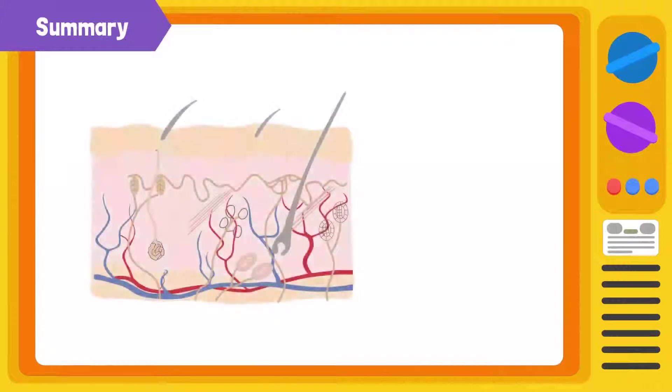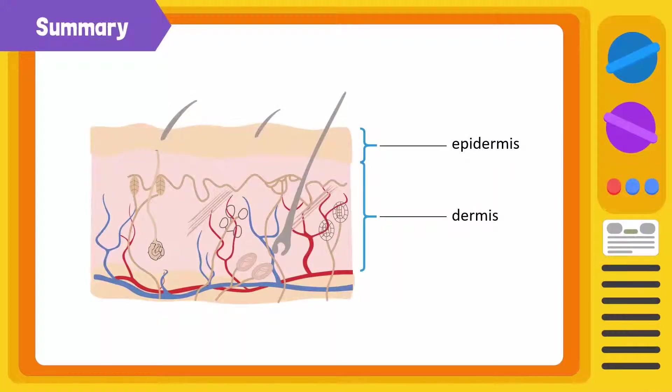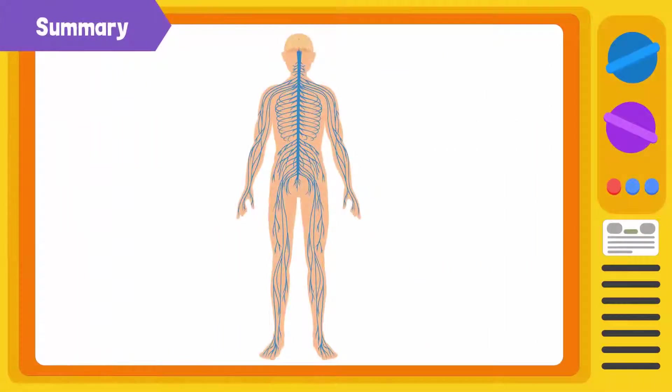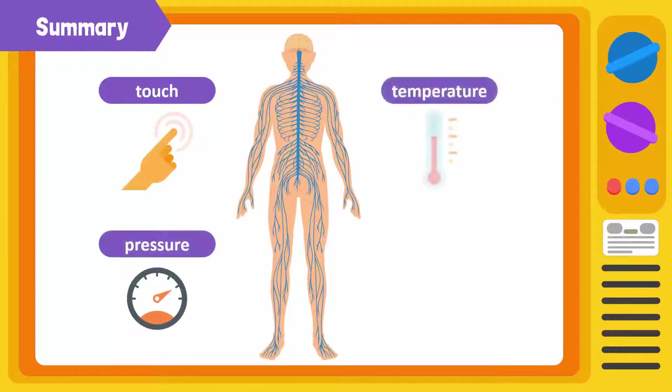The skin is made up of three layers, namely the epidermis, dermis and hypodermis. There are nerve cells scattered throughout the skin which are sensitive to touch, pressure, temperature and pain.